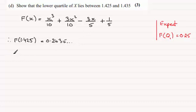And if you do f of 1.435, what you get is 0.2522 and so on. So you can see that these two values, one is below 0.25, the other is above.